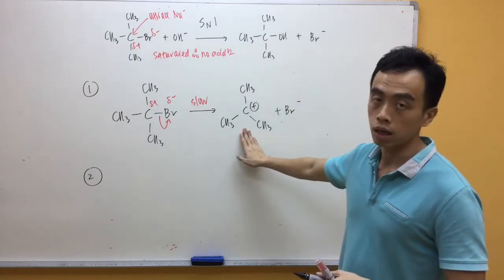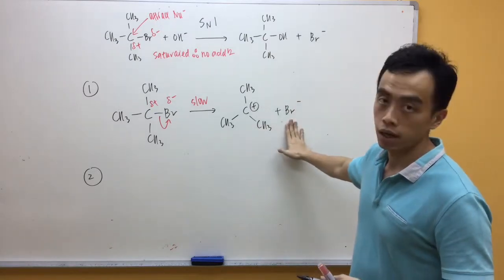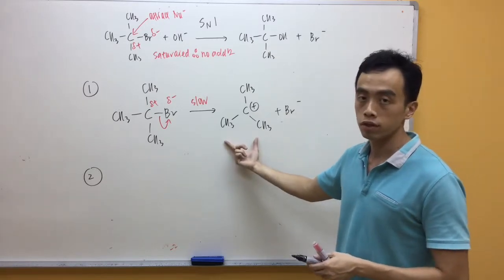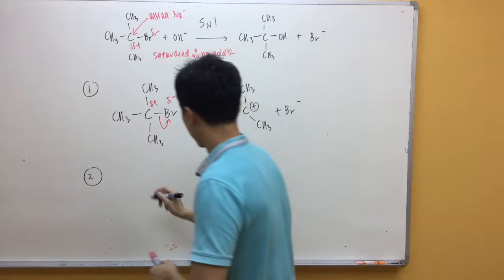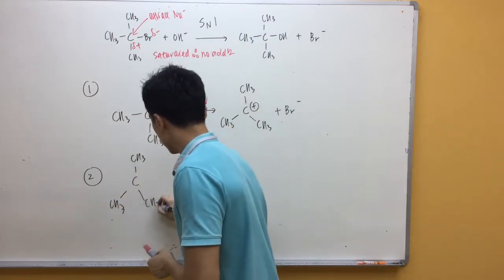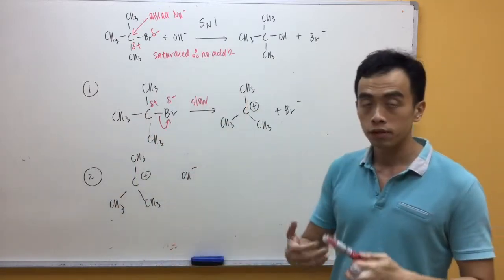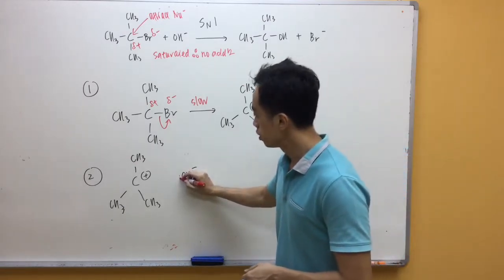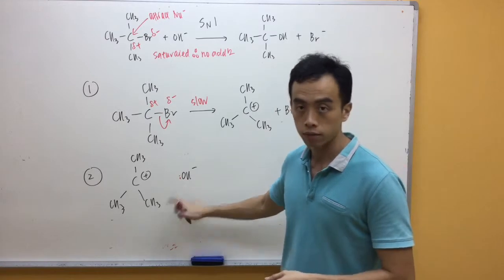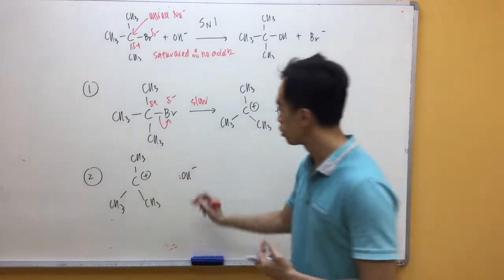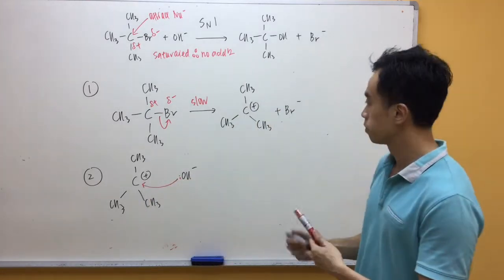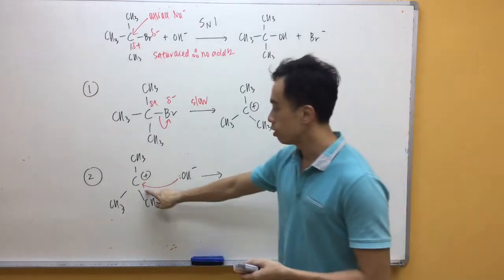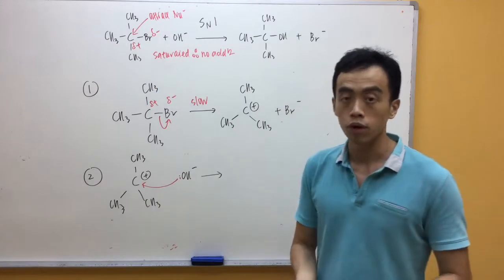Now, we have our product, my carbocation and my Br⁻. This carbocation will be involved in the second step. What happens next is my OH⁻ will come in. My OH⁻, which is negatively charged, will attack my carbocation, which is positively charged. The product formed, you can have C bonded to OH and form your alcohol.